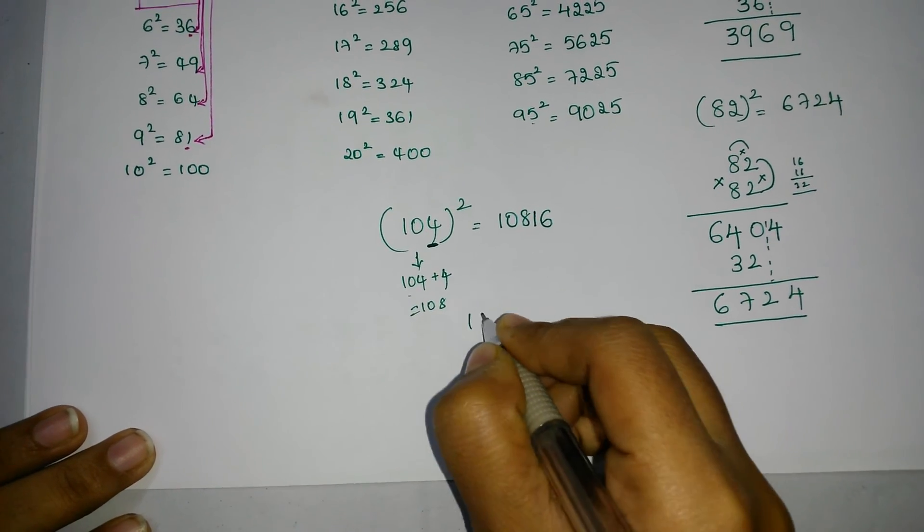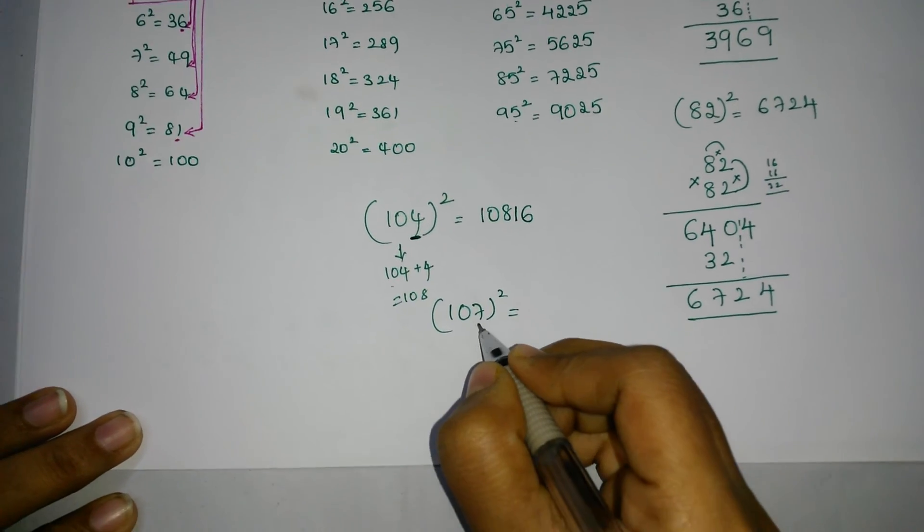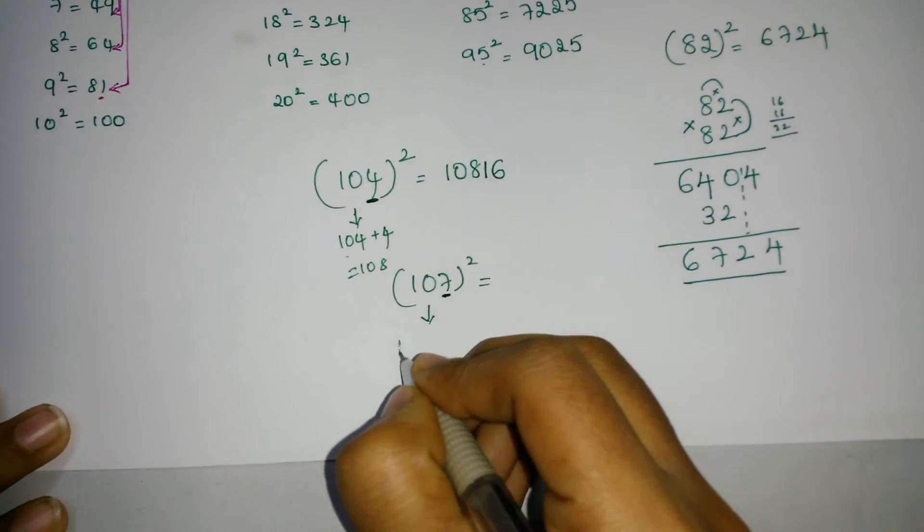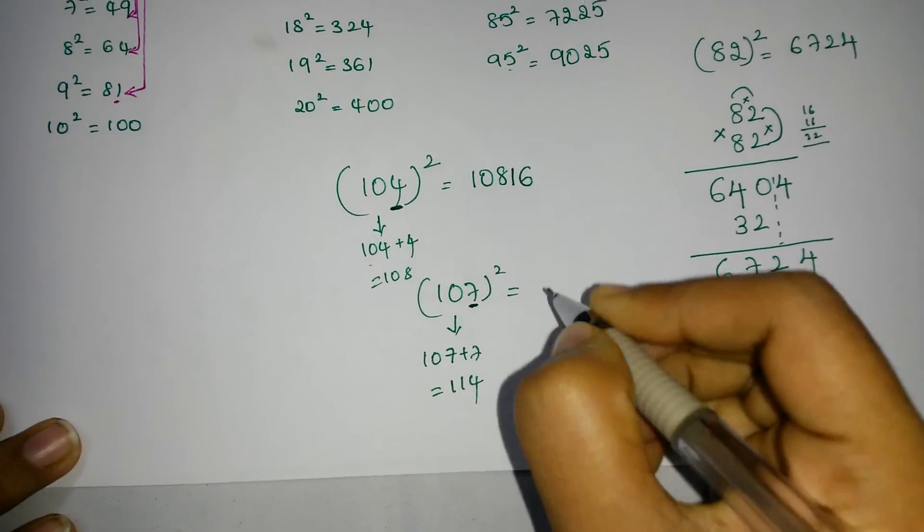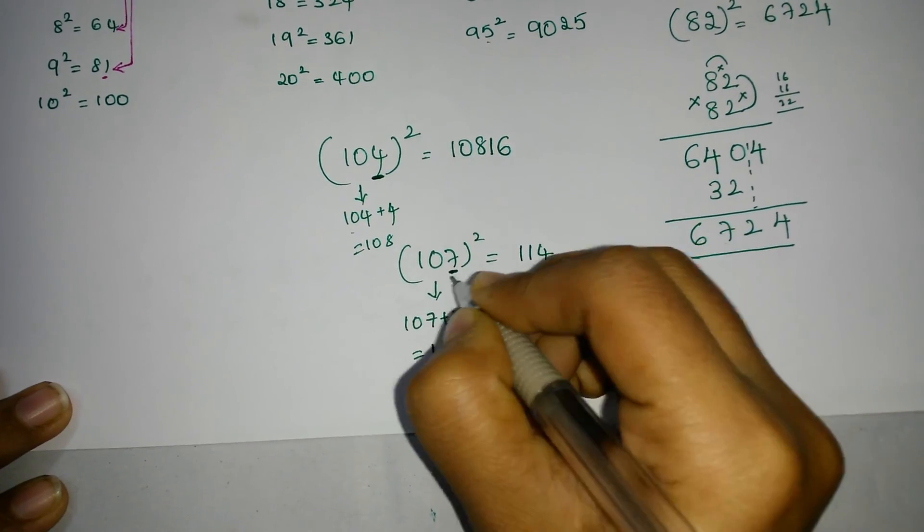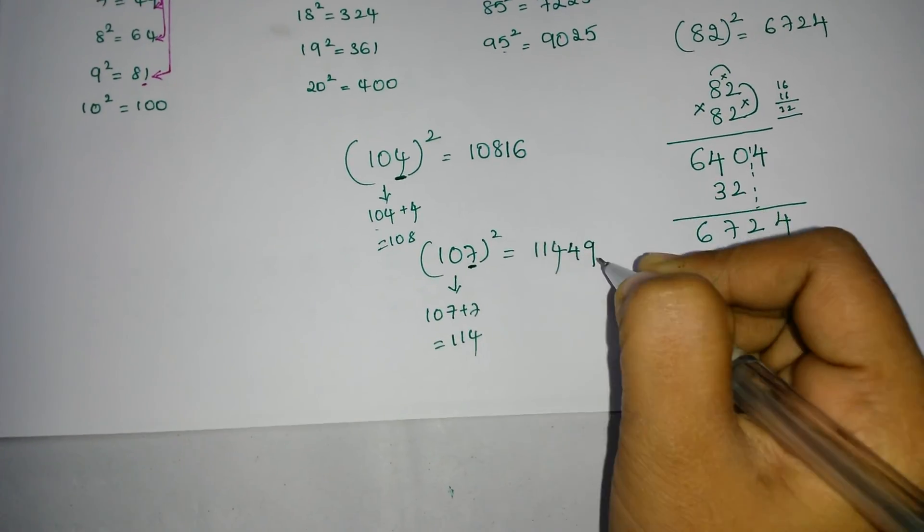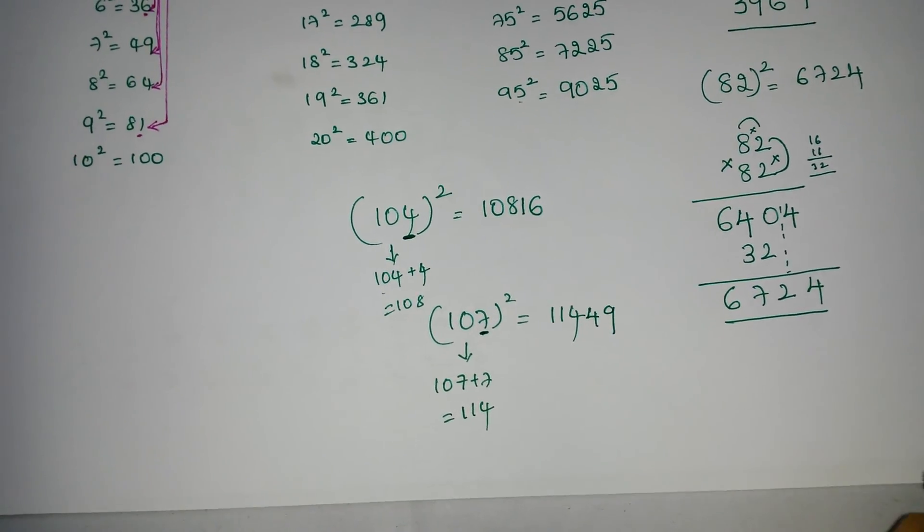In the same way, 107 square. In this one's place we have 7, so add 7 to the complete number. That means 107 plus 7 equals 114. So 114 and 7 square is 49. The answer is 11449.